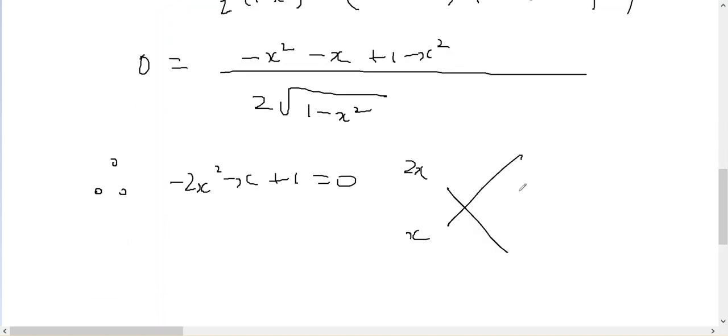2x and x, 1 and 1, with a negative on the 2x, gives me this times this is minus 2x. This times this is x. That leaves minus x, which is correct. So I've got minus 2x plus 1, x plus 1 equals 0. Therefore, x equals 1 half or negative 1.